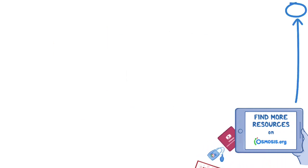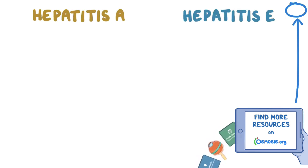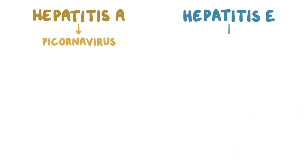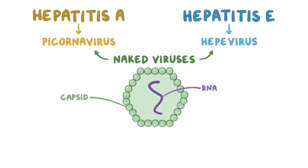Even though they cause the same disease, hepatitis A and E viruses come from different families. Hepatitis A is a picornavirus, while hepatitis E is a hepavirus. They are naked viruses made of single-strand RNA surrounded by a capsid, which is a spherical protein shell, and they're naked because the capsid isn't covered by a lipid membrane.